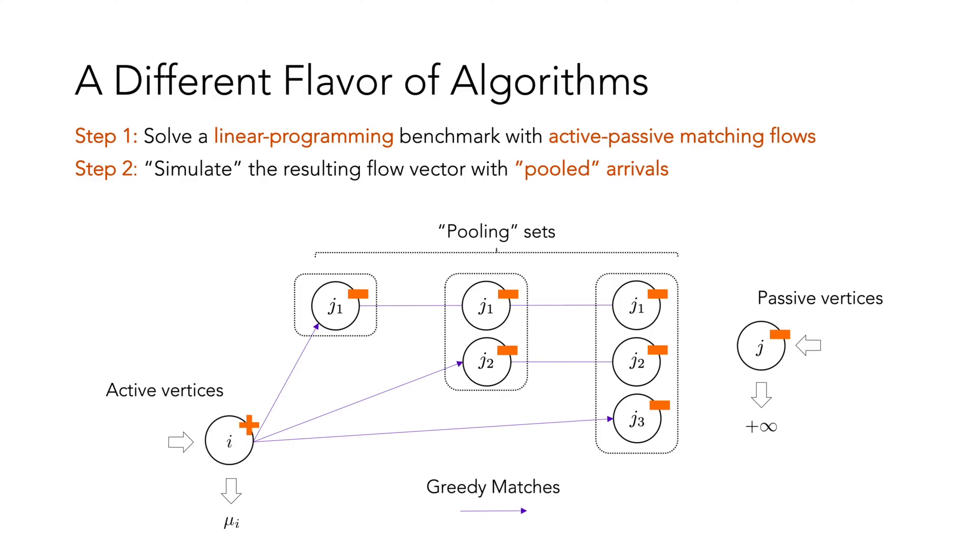This is what we call the distinction between active and passive agents. It can also minimize waiting times by creating pooling effects.